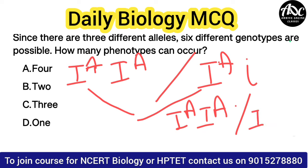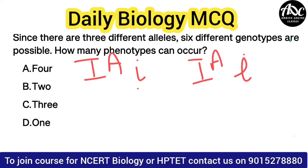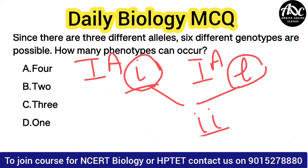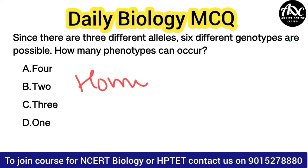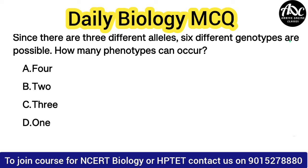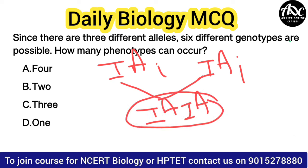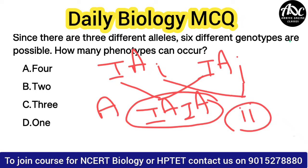If both parents have blood group A, we need to consider both homozygous and heterozygous cases. If father's blood group A is homozygous and mother's is heterozygous, then the small i from each parent can combine, making blood group O possible. So if the heterozygous condition is present, blood group A and blood group O can both appear in offspring.